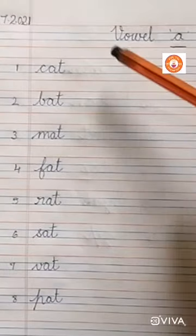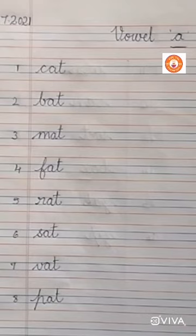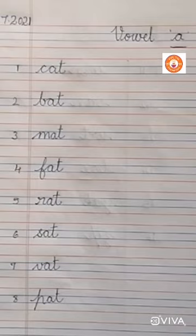Okay children, these are the words. Three-letter words with vowel A in the middle. Write all the words while writing, say and write, and send it to me. Bye.